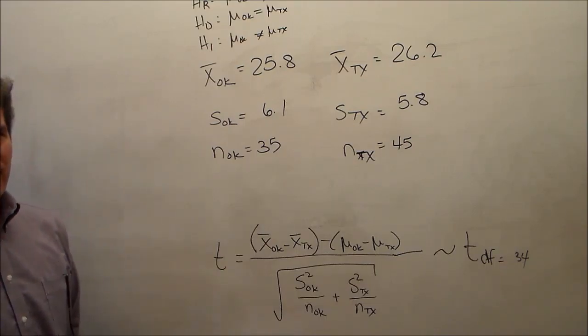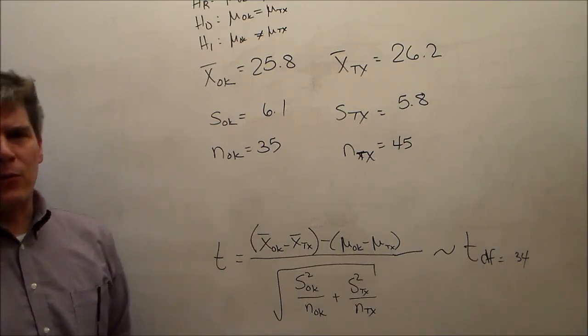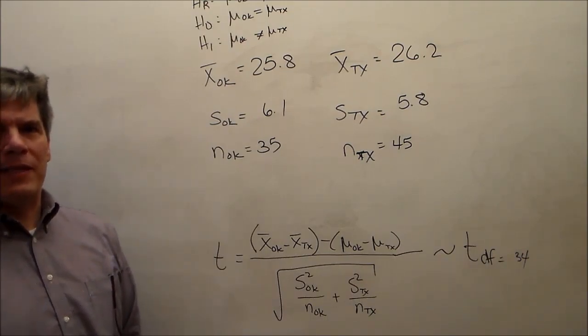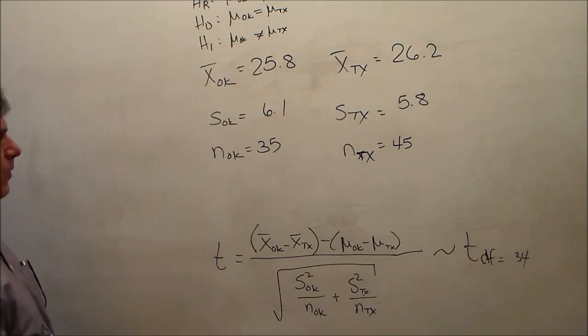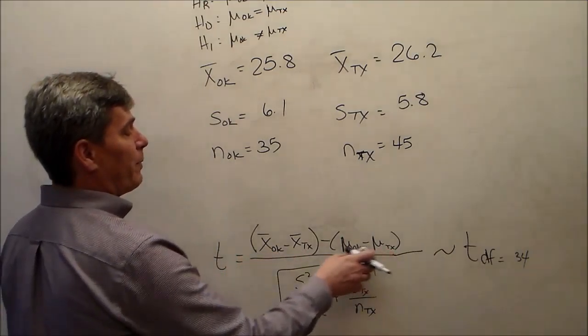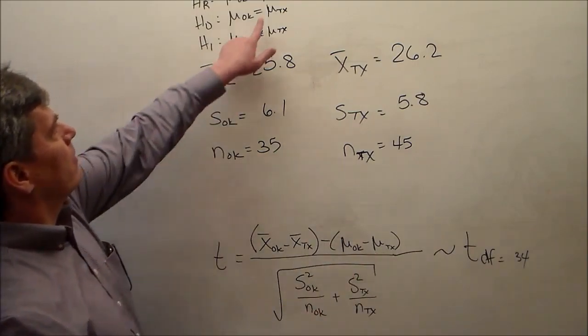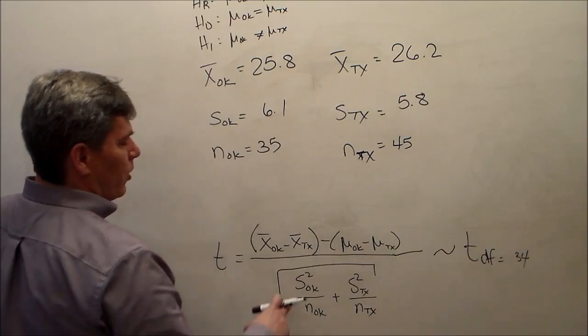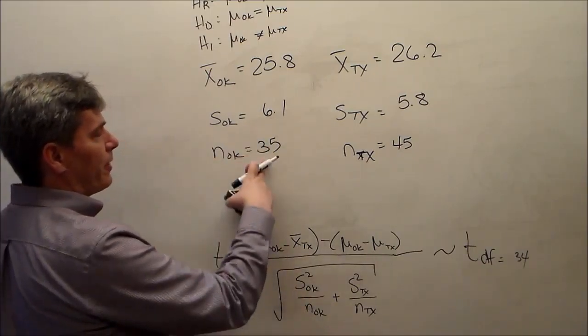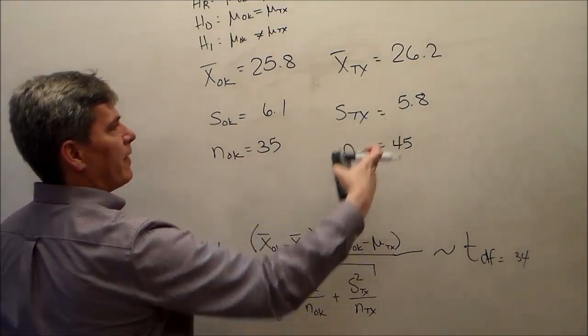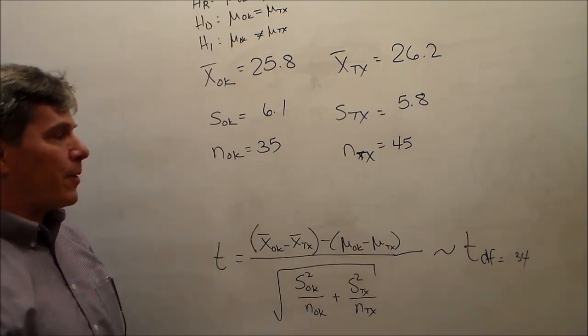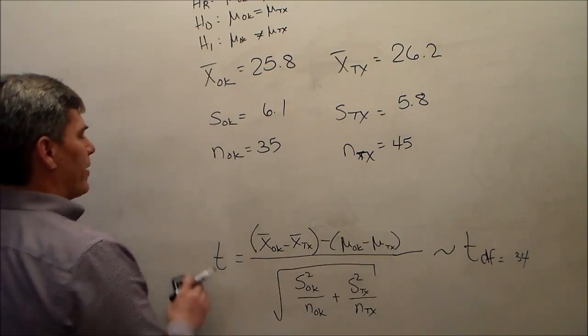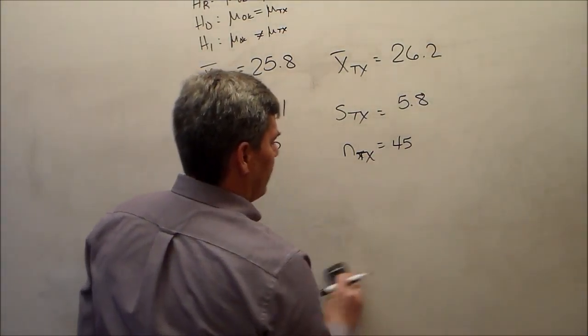The calculator does a better job at estimating the correct degrees of freedom using the Satterthwaite approximation. It will differ from what your book answers will be, but this is not a book question. So, we know what x-bar Oklahoma is, we know what x-bar Texas is, we know what the difference between mu Oklahoma and mu Texas is. We hypothesize it was zero. We know s-squared Oklahoma is 6.1-squared, we know n-Oklahoma is 35. We know s-squared Texas, which is 5.8-squared, we know n-Texas, which is 45. We can crank through this and compare it to a t-distribution with degrees of freedom 34. Or we can use our calculator.